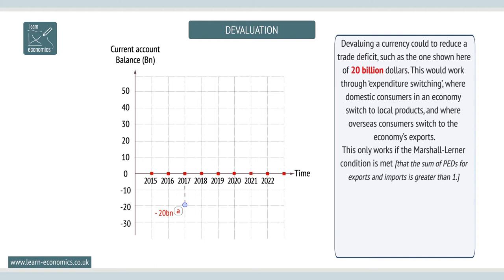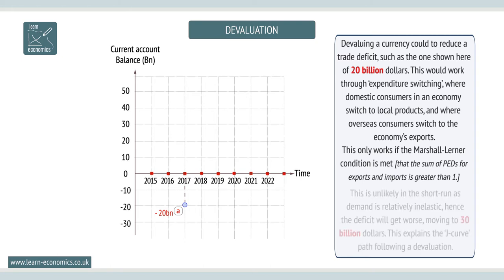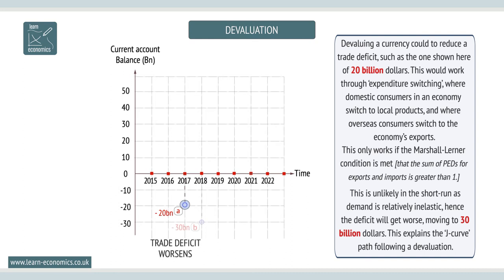This is unlikely in the short run, as demand is inelastic. The deficit will get worse, moving from $20 billion to $30 billion.